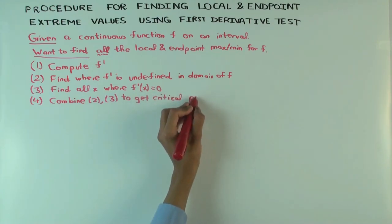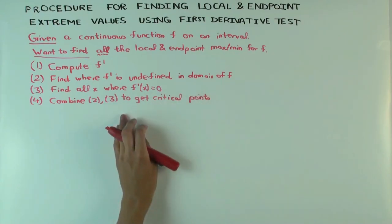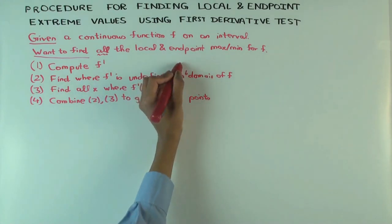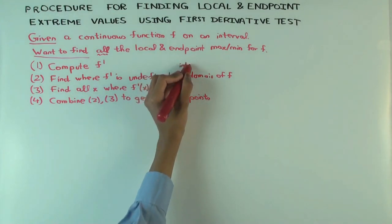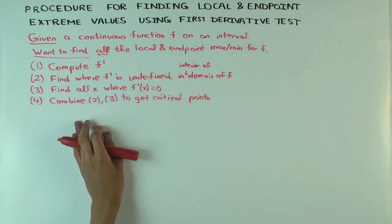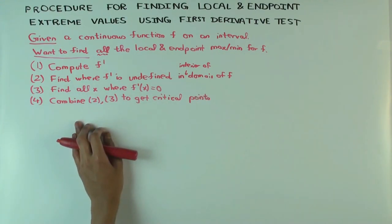What's the definition of a critical point? It's a point in the interior of the domain where F prime is either zero or doesn't exist. Note that at endpoints, the two-sided derivative won't exist, but those aren't considered critical points — they're covered separately as endpoints.